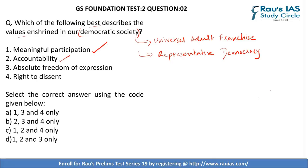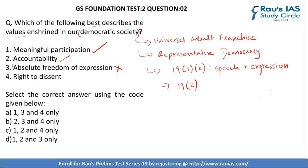Third — absolute freedom of expression. We know that Article 19(1)(a) talks about freedom of speech and expression, but such freedom is subject to certain restrictions given under Article 19(2). The third option becomes incorrect because the operative word is 'absolute,' and none of the freedoms under Article 19(1) are absolute since they are subject to restrictions under Article 19(2). Fourth is the right to dissent, which is correct because it is part of freedom of speech and expression. Hence, the correct answer is C — 1, 2, and 4 only.